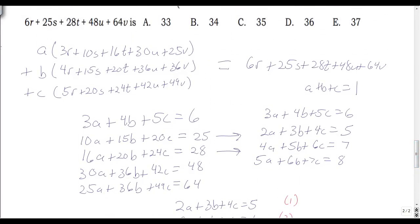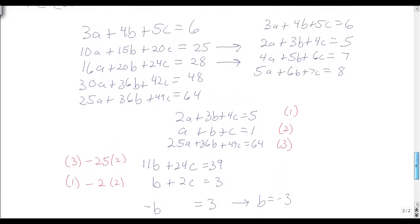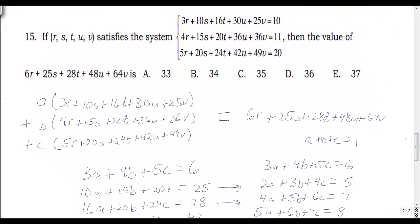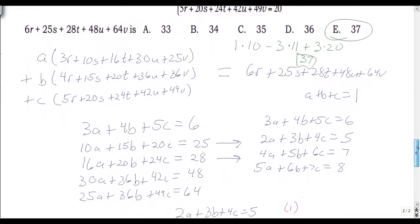With A equals 1, B equals negative 3, C equals 3, the answer is 1 times 10 plus (-3) times 11 plus 3 times 20, which equals 10 minus 33 plus 60 equals 37. The answer is E.